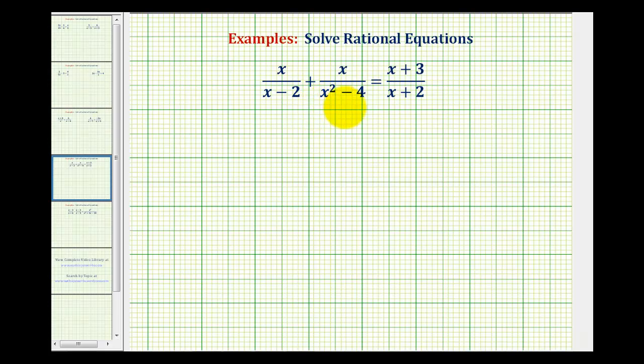In order to solve a rational equation as we see here, we want to multiply both sides of the equation by the least common denominator, or least common multiple of the quantity x minus two, the quantity x squared minus four, and the quantity x plus two. When we do this, we will eliminate the denominators, producing an equation that we can then solve.